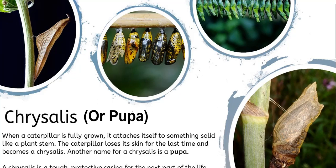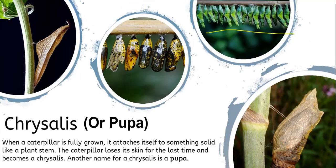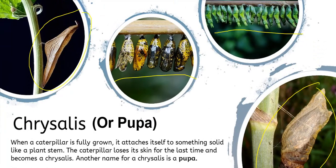A chrysalis is the tough protective casing for the next part of the cycle. You can see lots of different chrysalises on screen right now — they will attach themselves to anything sturdy and wrap themselves up into the chrysalis.